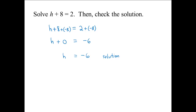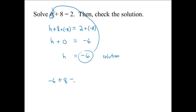We're supposed to check the solution. We take negative 6 and put it back into the original equation. Doing so gives us negative 6 plus 8 equals 2. Is this a true statement? If you lost $6 but gained $8, you're up to positive 2. So indeed we have a true statement.